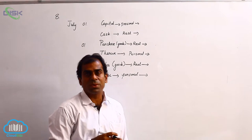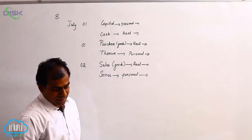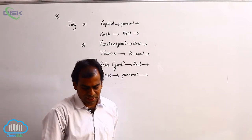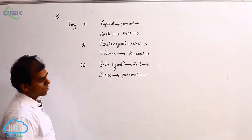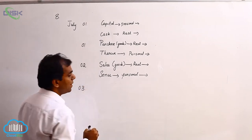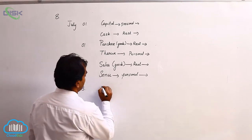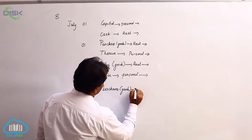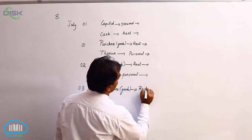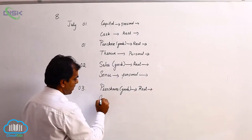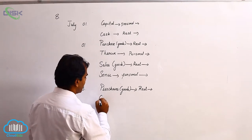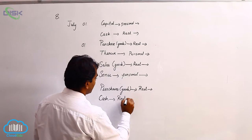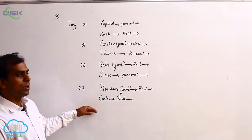On the third date: purchased goods from Ragan for cash. The purchases account represents goods, which is a real account. You decide whether goods are coming in or going out and apply the rule of real account. We purchased the goods for cash, and cash is again a real account — apply the rule: if cash is coming in, debit it; if it is going out, credit it.